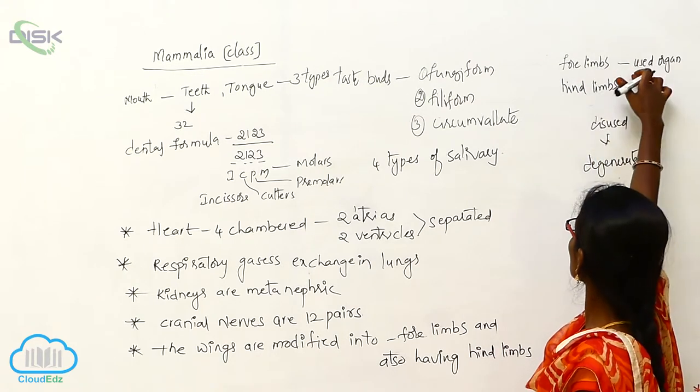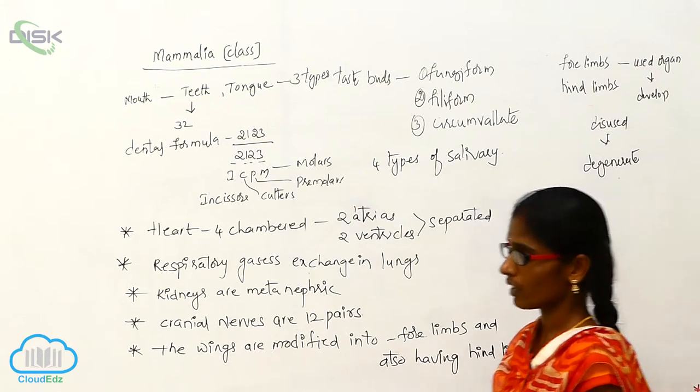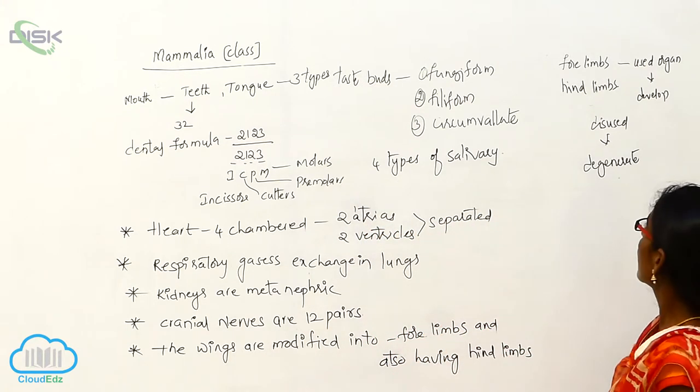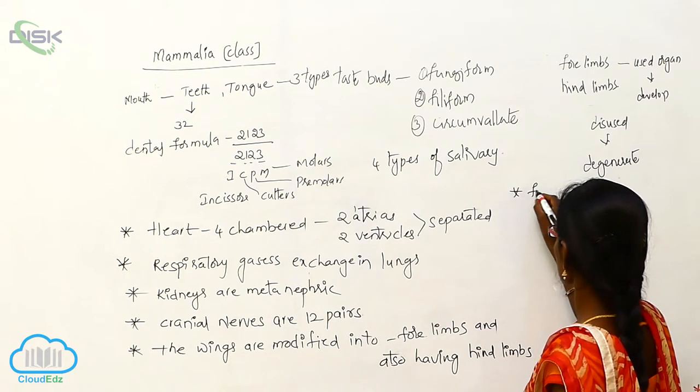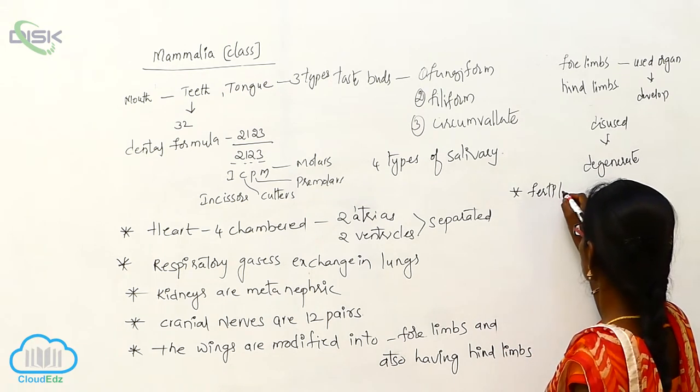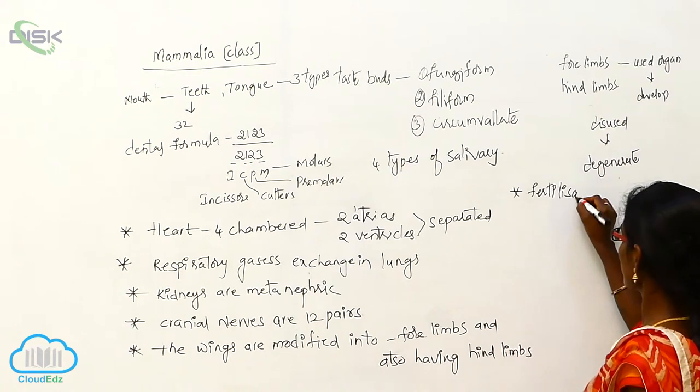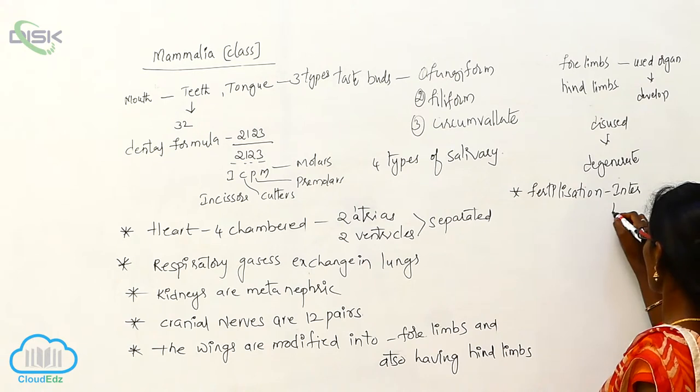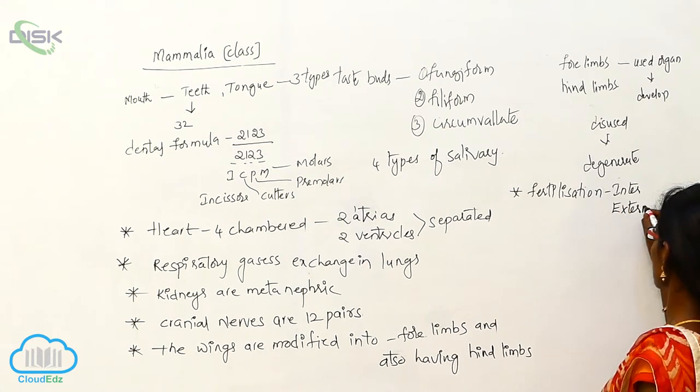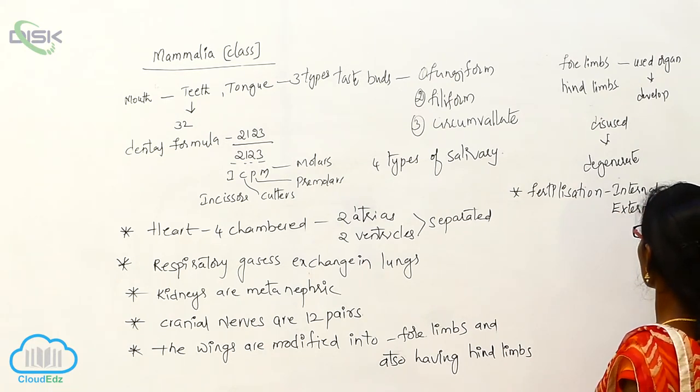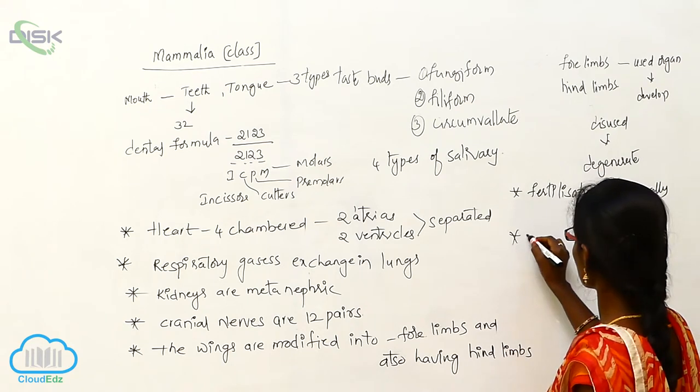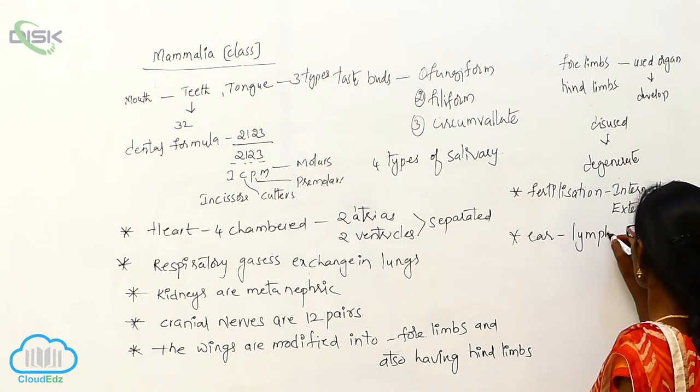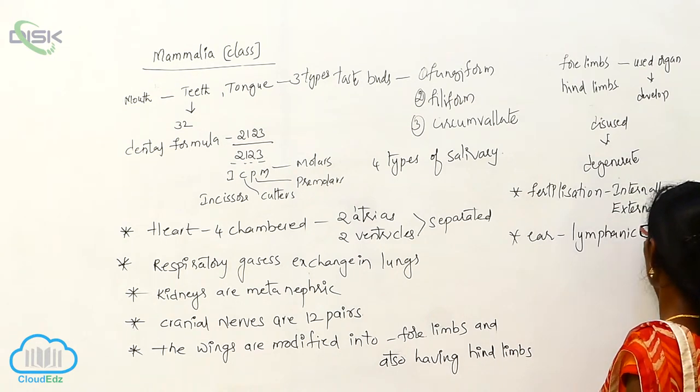Used organs undergo development and disused organs undergo degeneration. Fertilization takes place internally as well as externally. The ear has tympanic membranes.